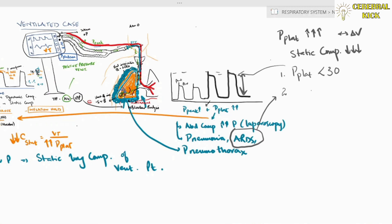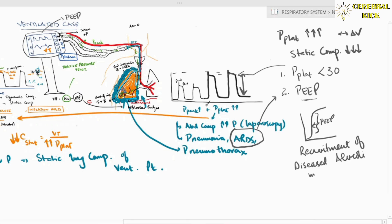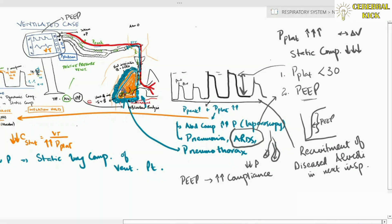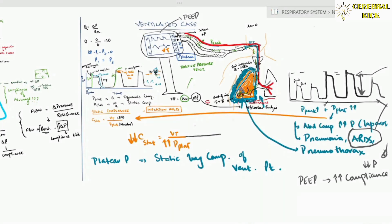Keeping plateau pressures below 30 prevents barotrauma, and giving PEEP recruits diseased alveoli in the next breath. The full equation for static compliance is: tidal volume divided by (plateau pressure minus PEEP). Higher PEEP lowers the denominator, which raises compliance. This is how PEEP improves lung compliance.